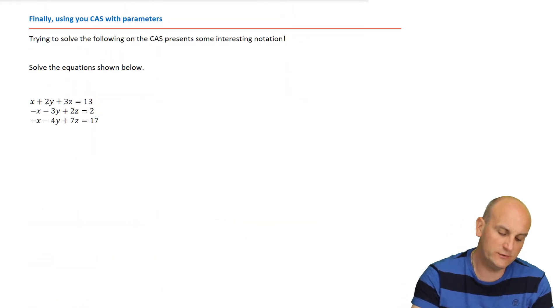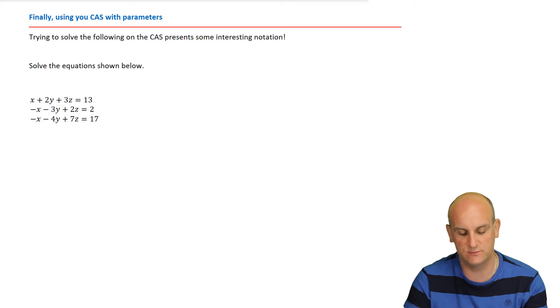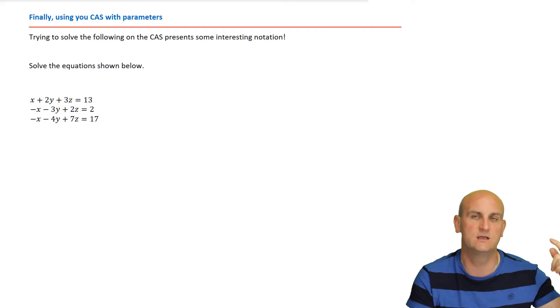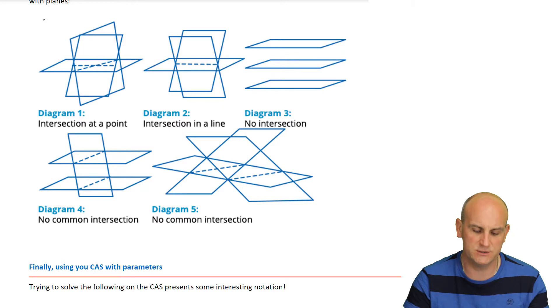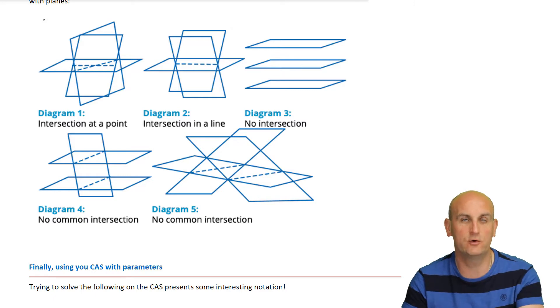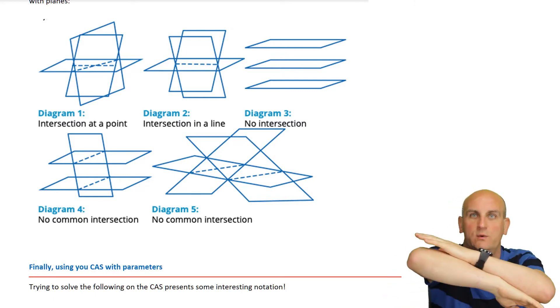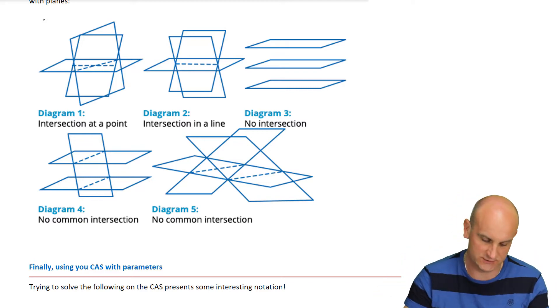What we can see is actually there are all sorts of ways that three planes can actually meet. The first one, in diagram one, is they intersect at a point. That's what we've just had. Diagram two, they intersect in a line. So it might well be that all three planes intersect at a line, or there may be no intersection. Diagram four is freaking awesome because yes, you may have two parallel planes and one that goes through it, in which case there's no common intersection. And diagram five, there's no intersection at all between any of them.